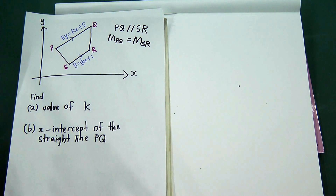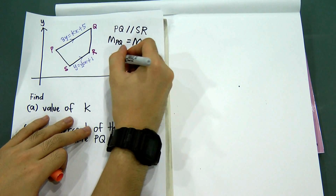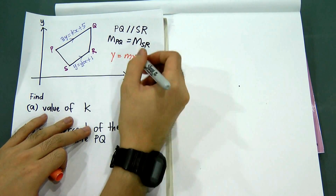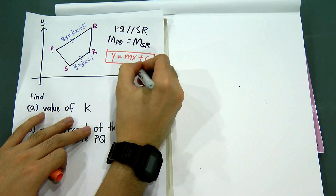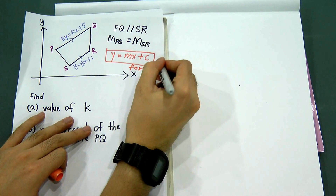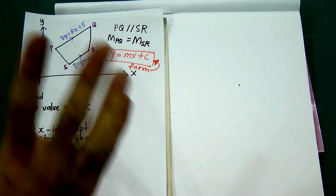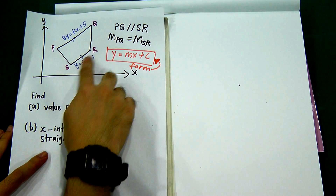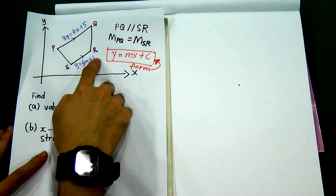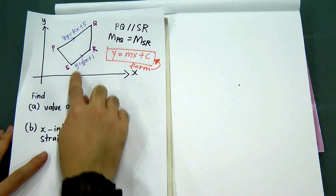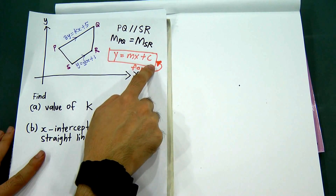In order to get the gradients, we must change all the equations to y = mx + c form. For equation SR, it is already in y = (1/2)x + c form. But for equation PQ, it is not yet in y = mx + c form because it has 3y.